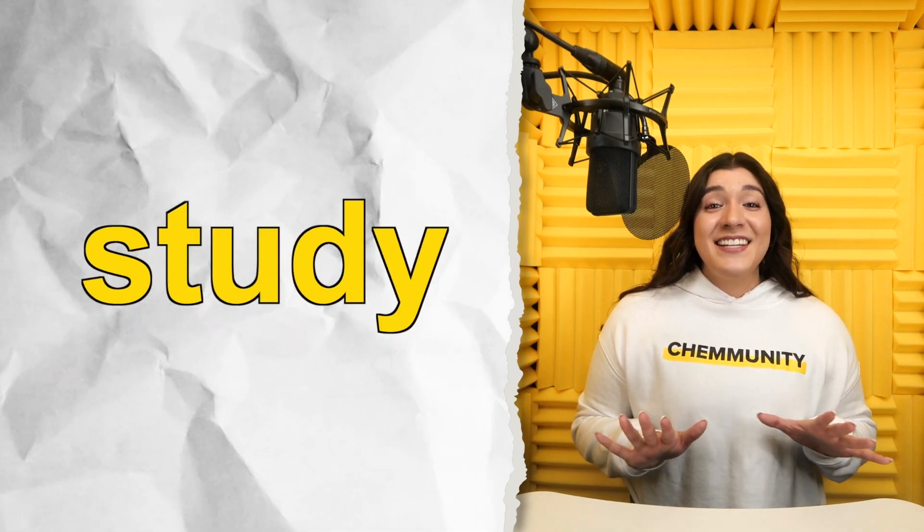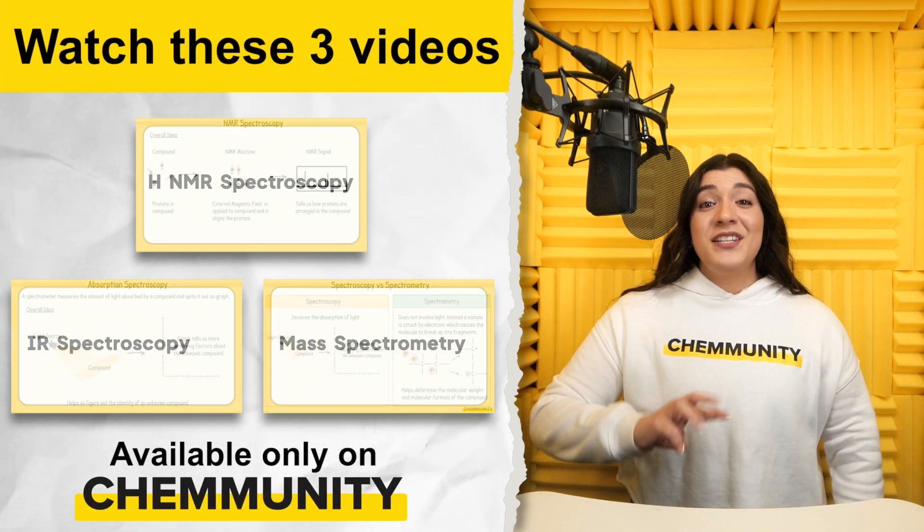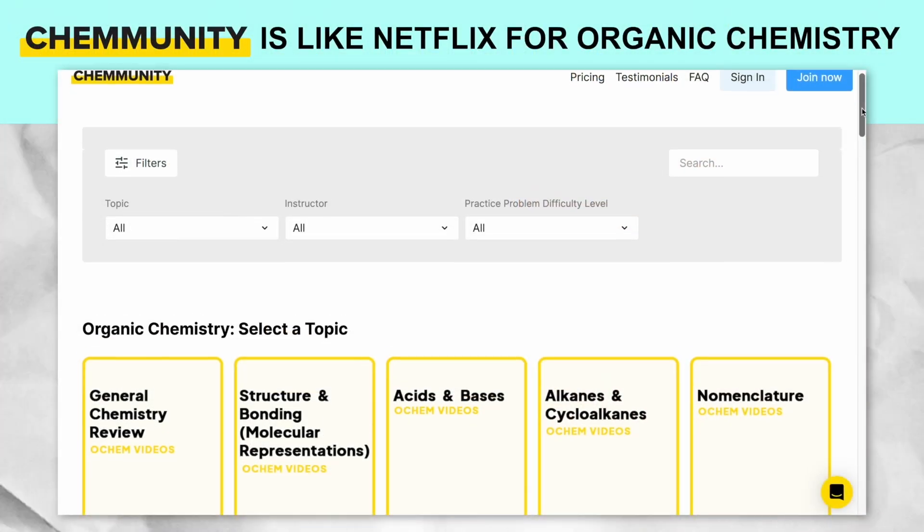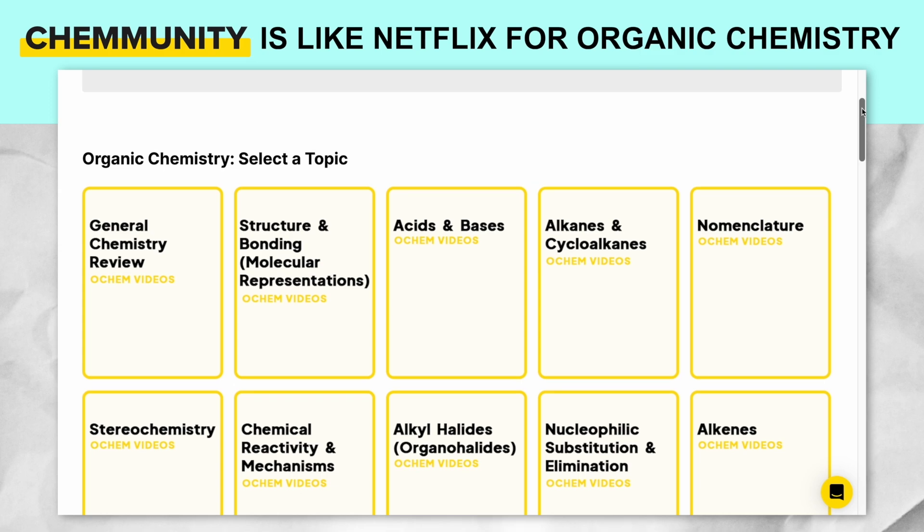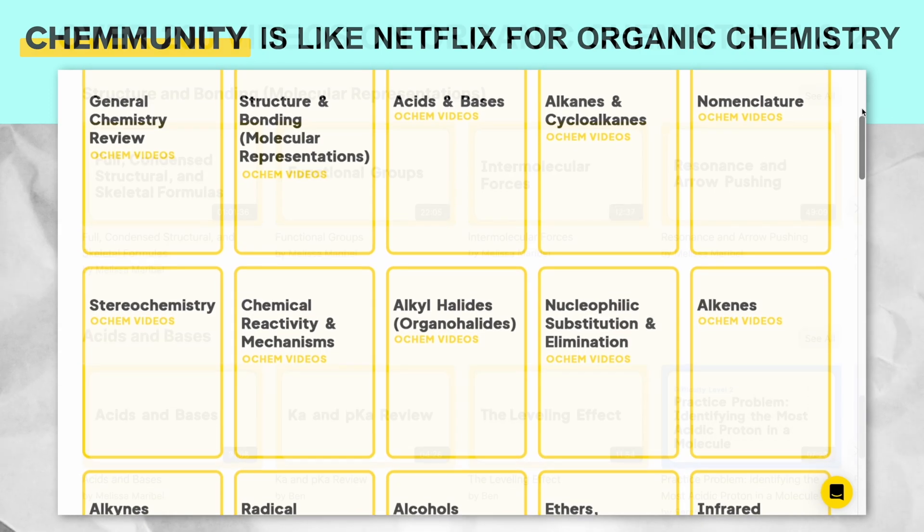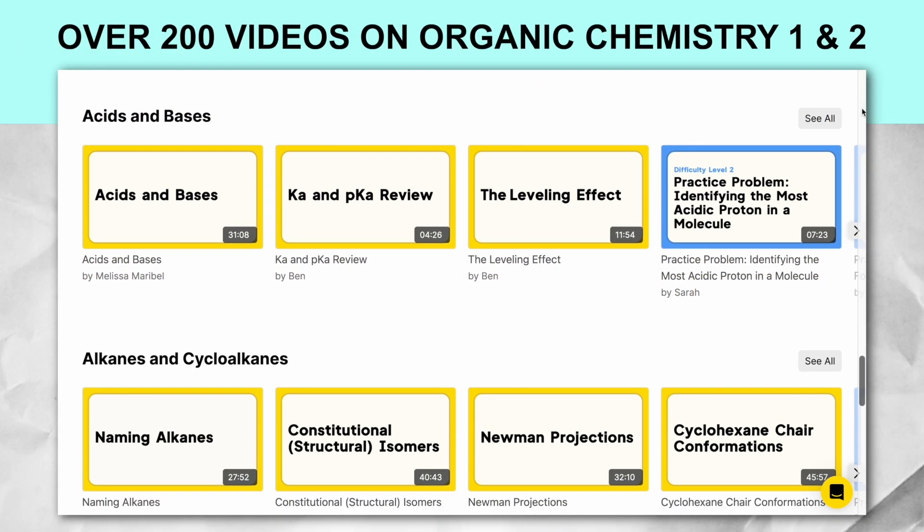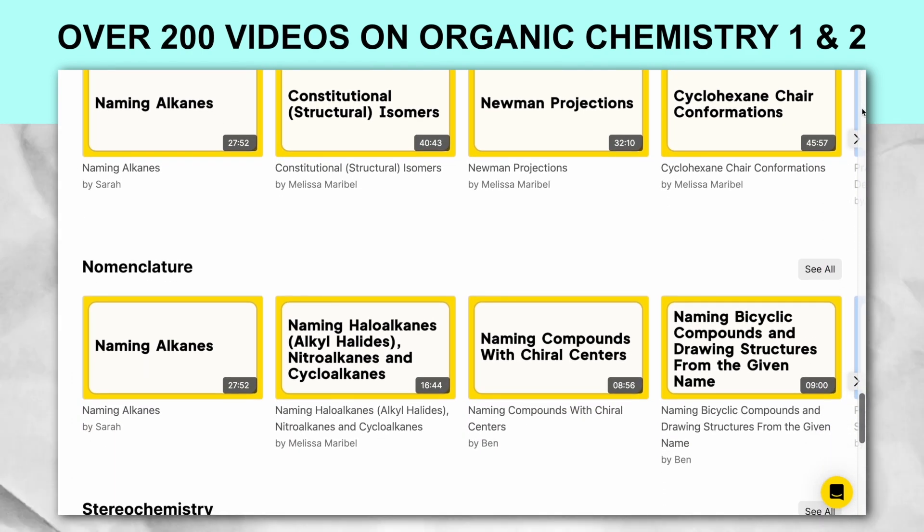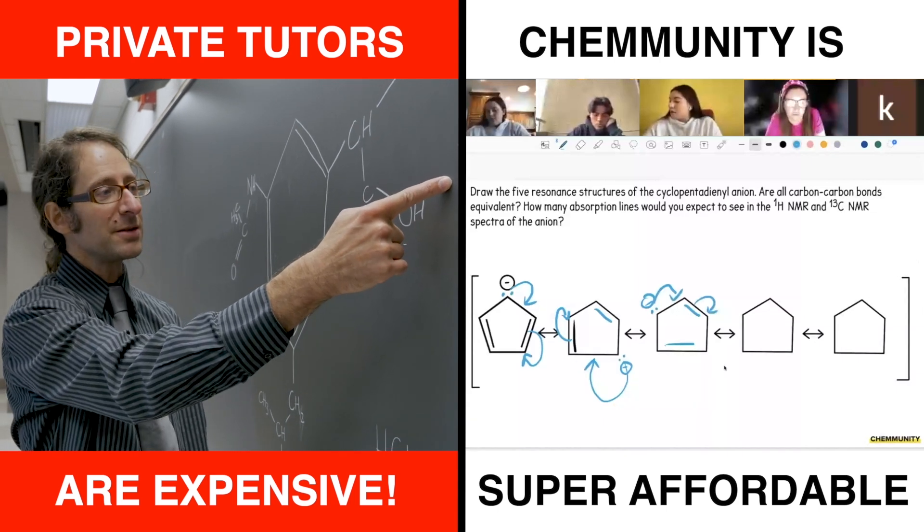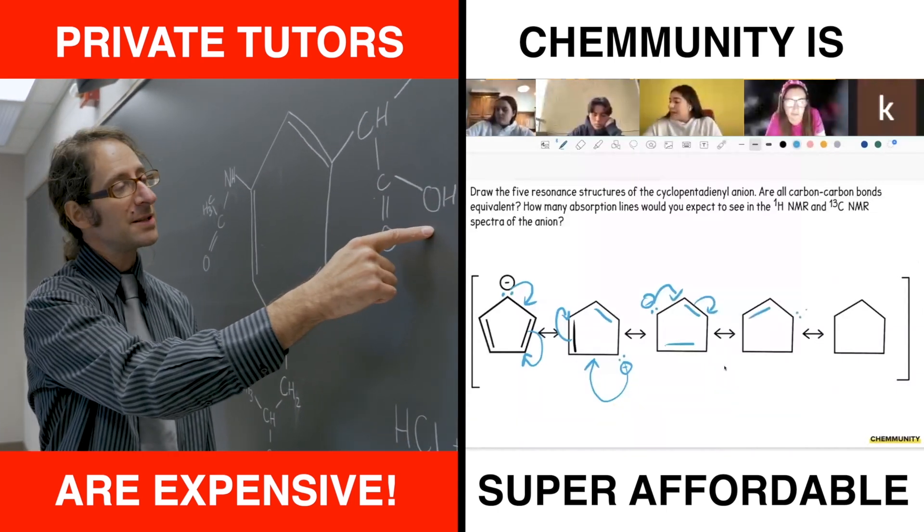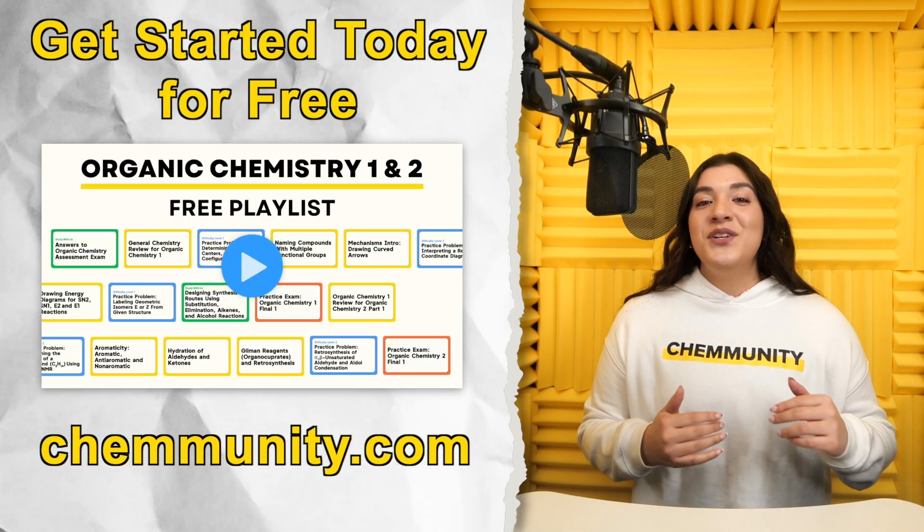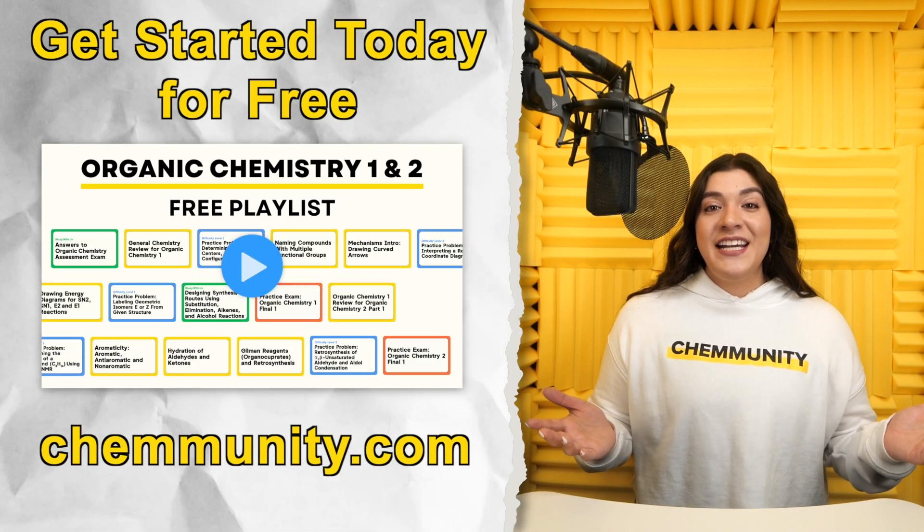Before meeting up with Ari for the study session, I made sure she watched the three foundational videos on Community. Community is like Netflix for organic chemistry, where you'll find over 150 videos on the organic chemistry one and two topics you need to know this semester. For less than the price of one hour of tutoring, you get an entire month's worth of step-by-step instruction from me. After this video, head over to community.com and join Community for free.